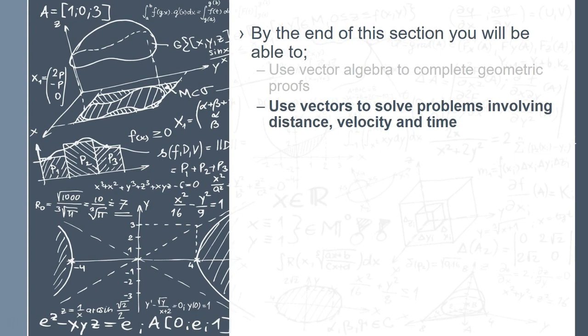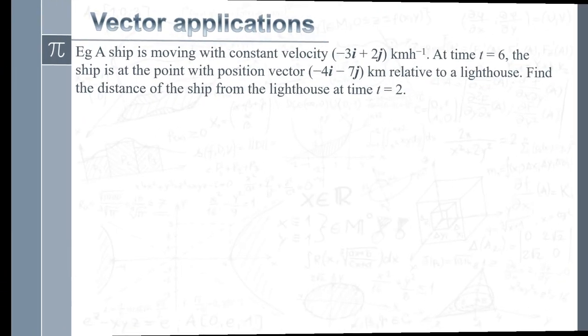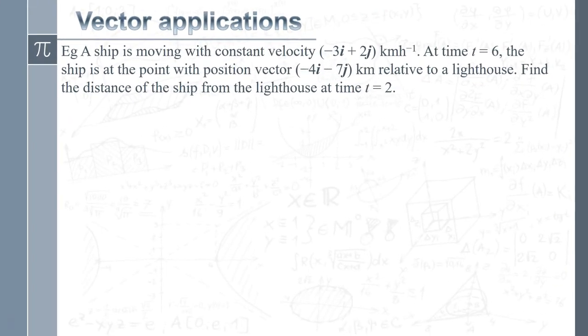So on we go. Let's have a look at a problem involving speed, vectors, velocity, time, and all that kind of stuff. We've got a ship moving with a constant velocity that's described in terms of a vector, and we're given a position vector of where it is relative to a lighthouse. That's quite a lot to process in one go, so what I'm going to do is turn it into a diagram.